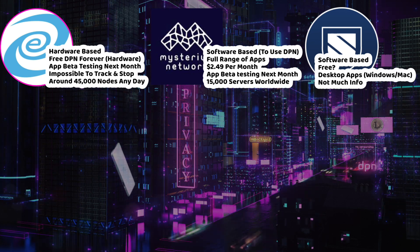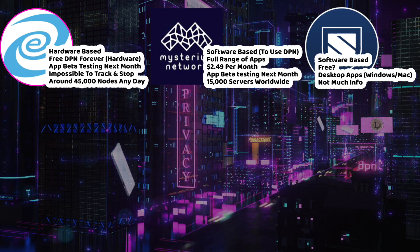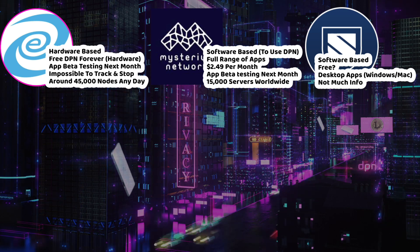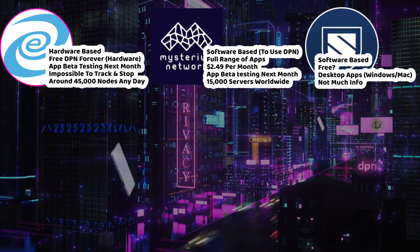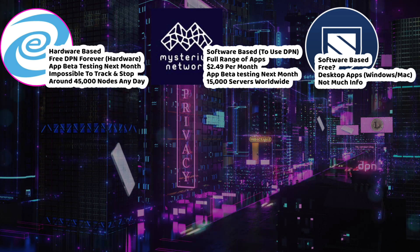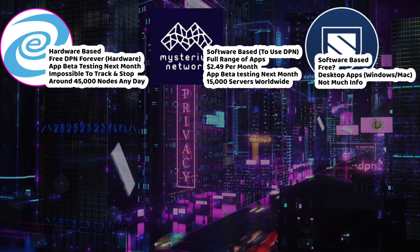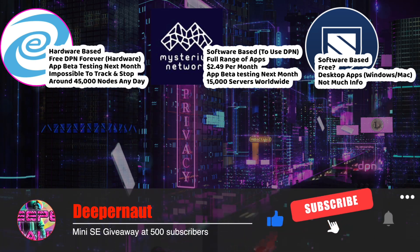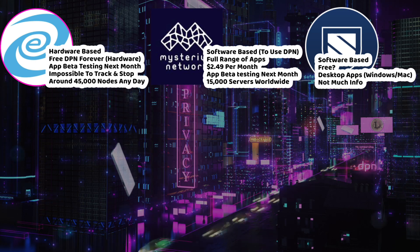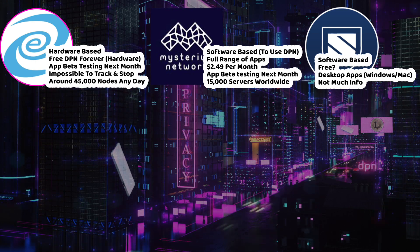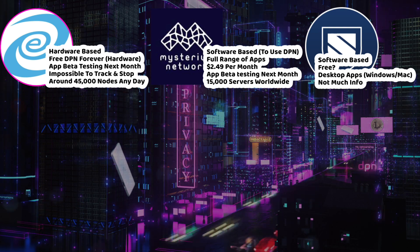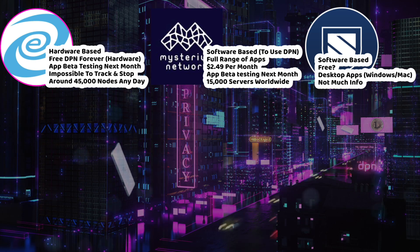Lastly, we have Sentinel. It's one I haven't heard much about, but the website looks pretty smart. It's software-based with apps for most platforms. I think it might be free — nodes are downloaded and hosted by users who mine, pretty much like what Deeper Network does, so it may be free for everybody. The website doesn't give much information and doesn't tell you how many nodes there are, but if it has all those apps and is free and decentralized, that's really smart. All three of these are better than any of the VPNs.